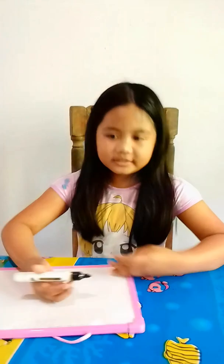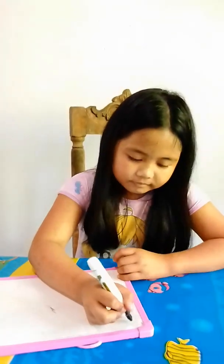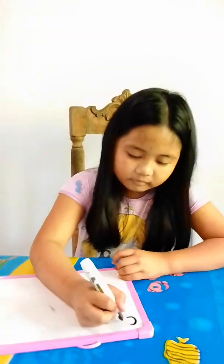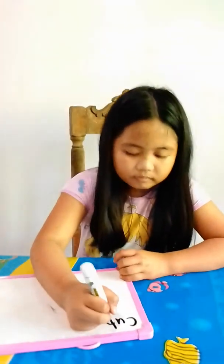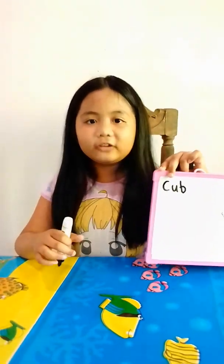What is the baby of a bear? The baby of a bear is a cub. The spelling is C-U-B. What is the baby of a cat?